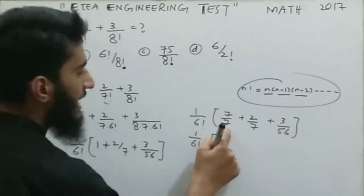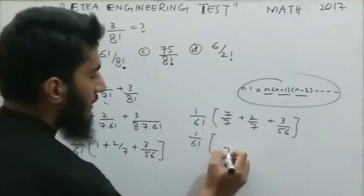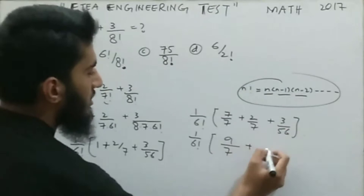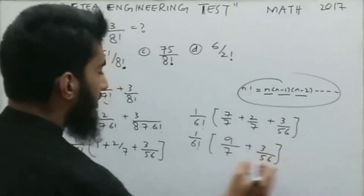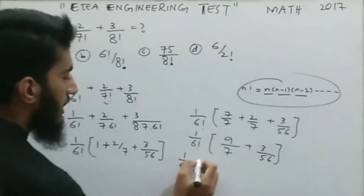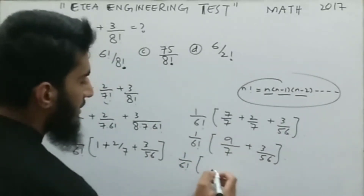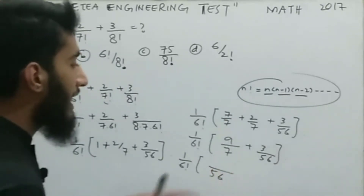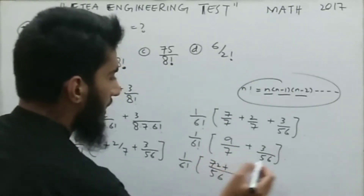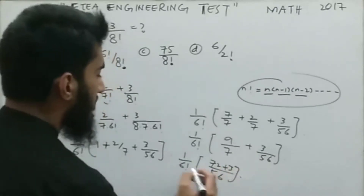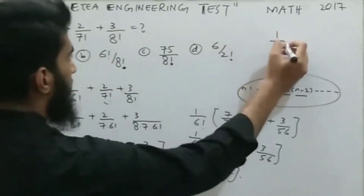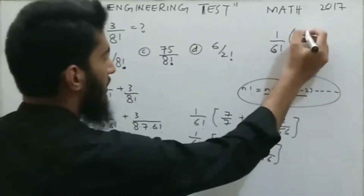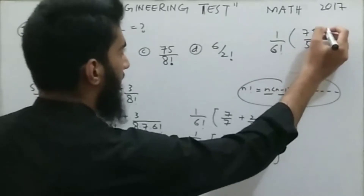Now I take the LCM of the terms inside the bracket. The LCM of 1, 7, and 56 is 56. So 1 becomes 56/56, 2/7 becomes 16/56, giving numerator 56 + 16 = wait — taking LCM of 7 and 56 is 56: multiply 9 by 8 gives 72, plus 3 gives 75. So we have (1/6!) × (75/56).